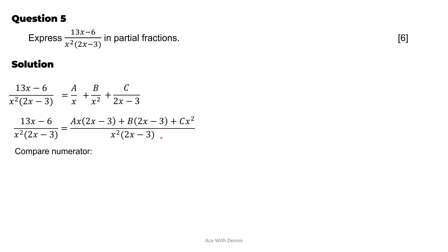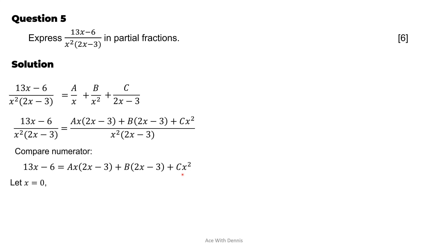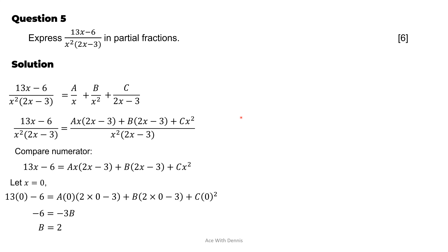Comparing numerators: 13x minus 6 equals A·x(2x minus 3) plus B(2x minus 3) plus Cx squared. Letting x equals 0 eliminates A and C: negative 6 equals negative 3B, so B equals 2. Letting x equals 3/2 eliminates A and B: 27/2 equals (9/4)C, so C equals 6. Letting x equals 1 to find A: 7 equals negative A minus 2 plus 6, so A equals negative 3. Therefore the partial fractions are: negative 3 over x plus 2 over x squared plus 6 over (2x minus 3).